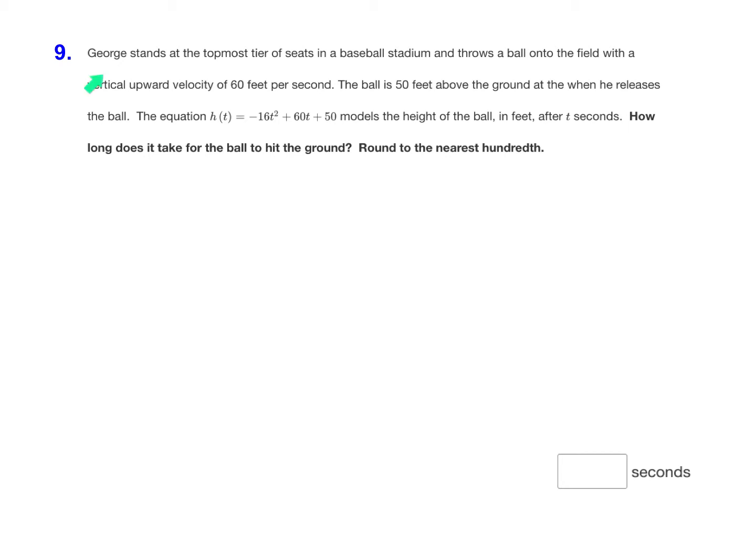Here, George stands at the topmost tier of seats in a baseball stadium and throws a ball onto the field with a vertical upward velocity of 60 feet per second. The ball is 50 feet above the ground when he releases the ball, and the equation h(t) = -16t² + 60t + 50 models the height of the ball in feet after t seconds.